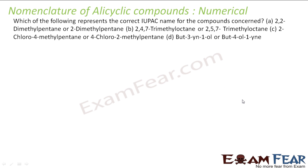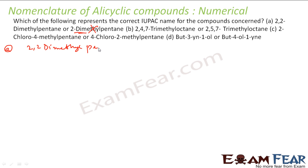This is a question: which of the following represents the correct IUPAC name? The first option is 2,2-dimethylpentane or 2-dimethylpentane. Since it is dimethyl, you should have two numbers here. So 2,2-dimethylpentane is correct for option A.